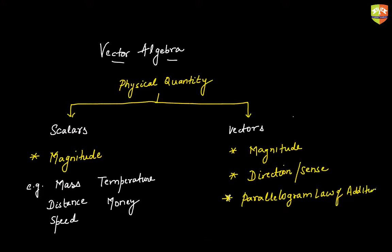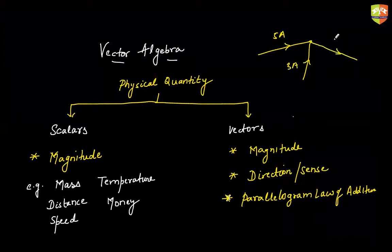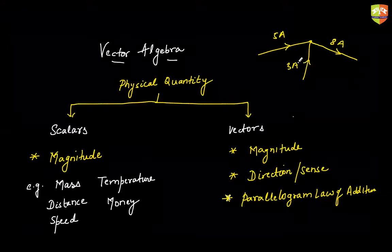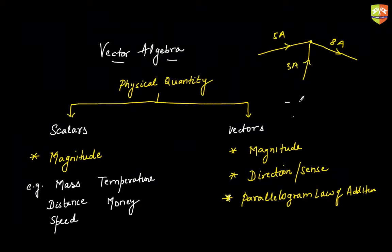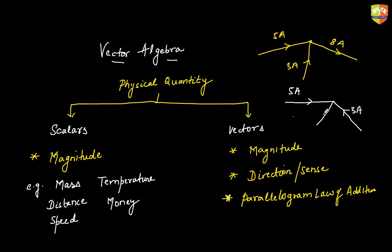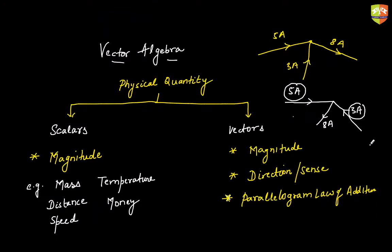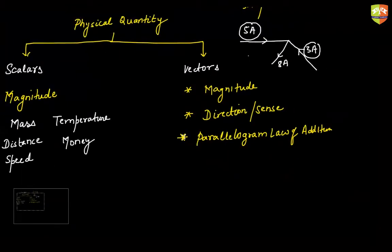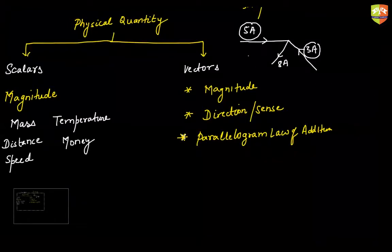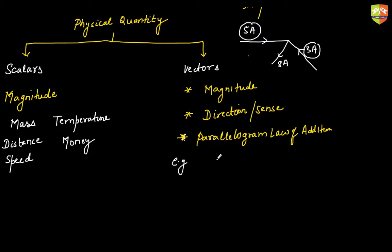Current has magnitude and direction, but it is not a vector quantity because currents don't follow the parallelogram law of addition. For example, using KCL: if five amperes and three amperes meet at a node, eight amperes flows out — it's a simple algebraic sum regardless of the direction of the wires. So current cannot be called a vector quantity. A vector must have magnitude, direction, and must follow the parallelogram, triangular, or polygon law of addition.